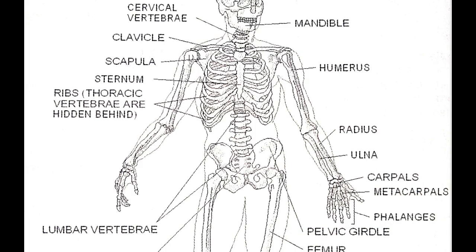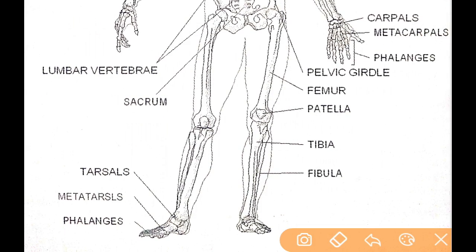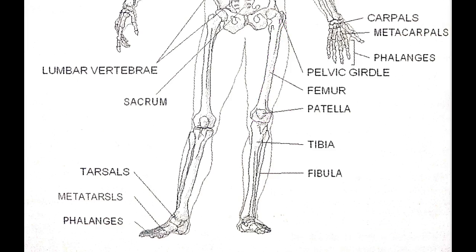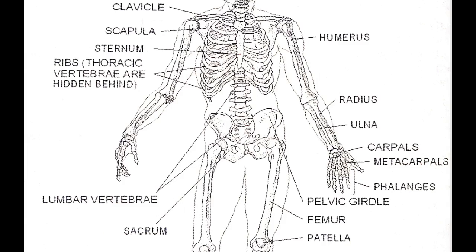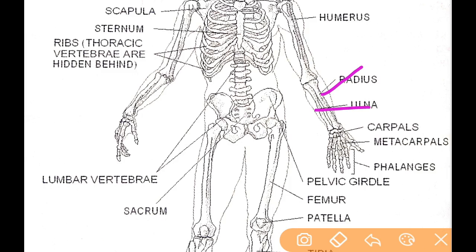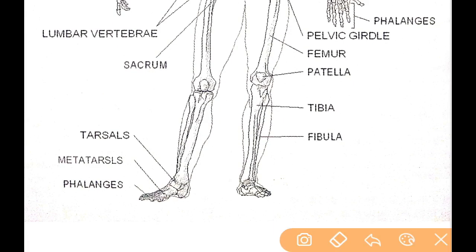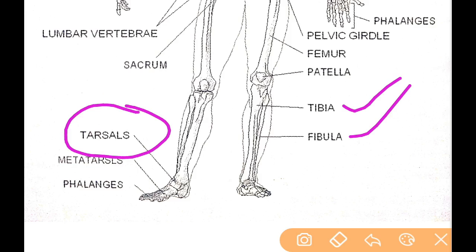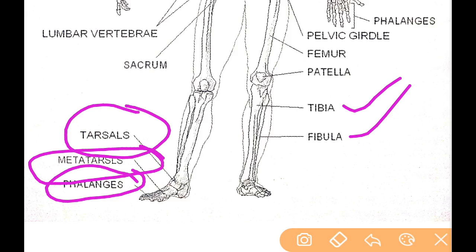Similarly in the hind limbs, the biggest and thickest bone in the body is the femur. The knee part bone is called the patella. In the lower leg there are two bones: tibia and fibula. Carpals in the hand (wrist bone) correspond to tarsals (ankle bone) in the leg. Metatarsals form the foot, and phalanges are the finger/toe bones.